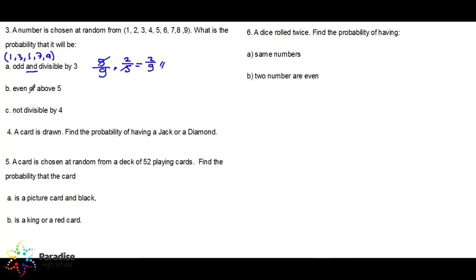Next: what is the probability of having an even number OR above five? The possible outcomes for even numbers are two, four, six, and eight. Above five means six, seven, eight, and nine. Do we have anything in common between these two sets? Yes — six and eight appear in both. So we call this a non-mutually exclusive event.